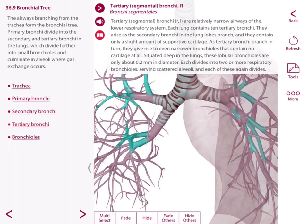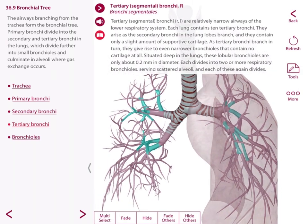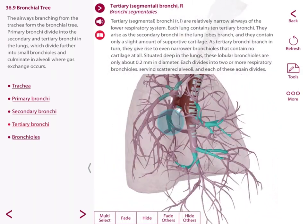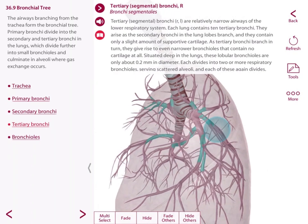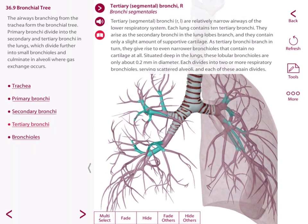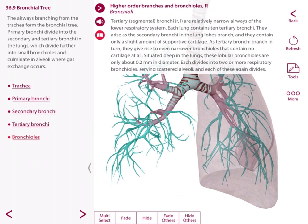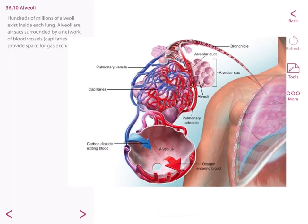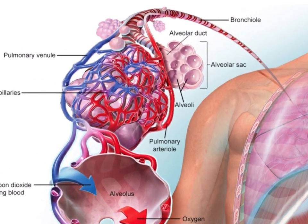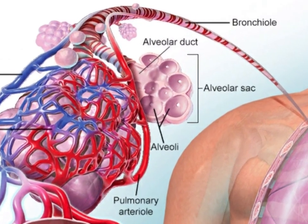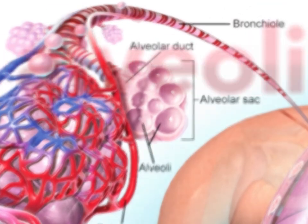As they branch into the tertiary bronchi, you see that once again these are smaller structures that begin with only a slight amount of supportive cartilage and then run into what are known as bronchioles — even smaller structures that contain no cartilage at all. The significance of these structures is that as they continue to get even smaller, they divert air into what we will eventually see here in this image as alveoli.